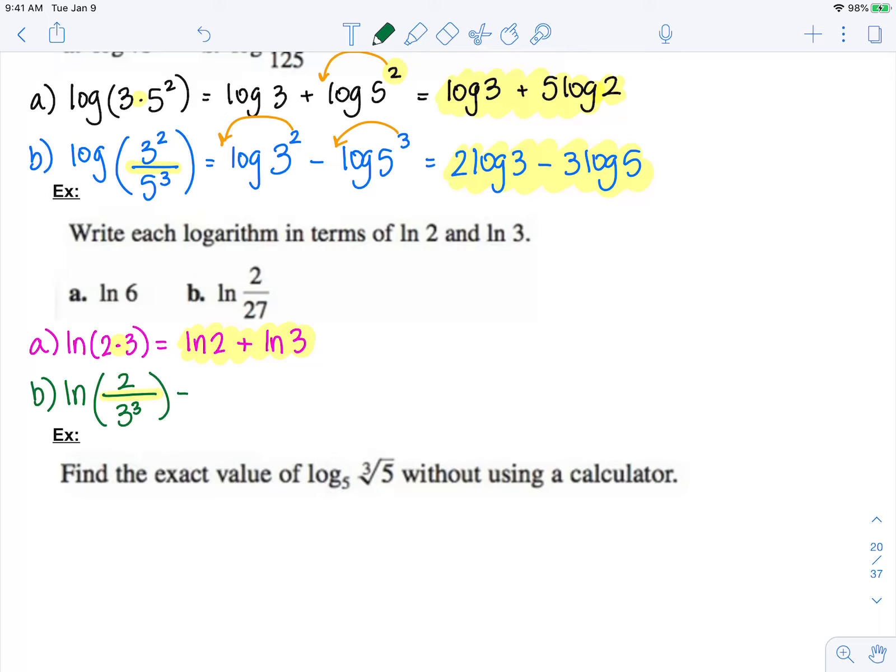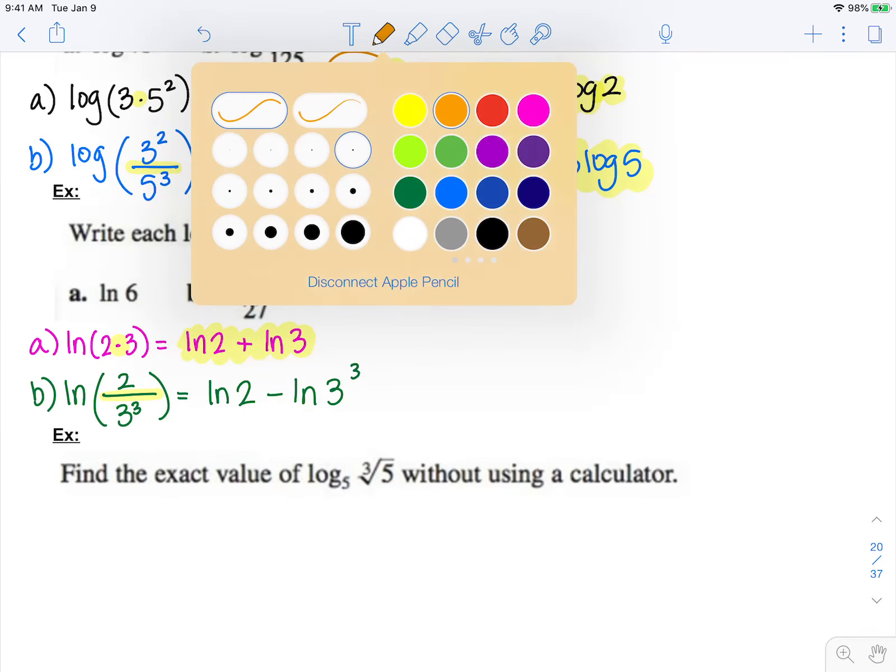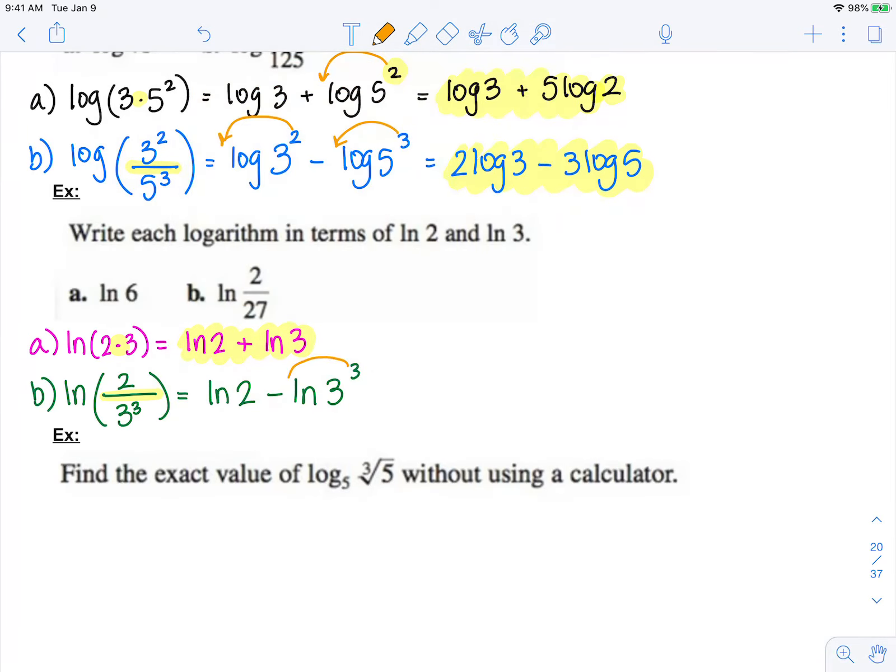division expands into subtraction. ln of 2 minus ln of 3 cubed. And remember, that exponent can come down and multiply in front. So this is ln of 2 minus 3 ln of 3.